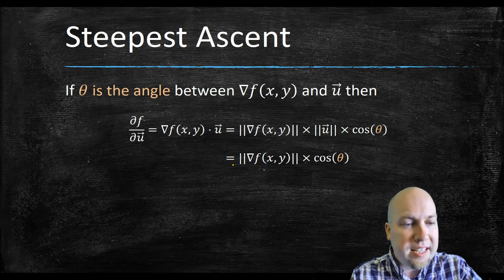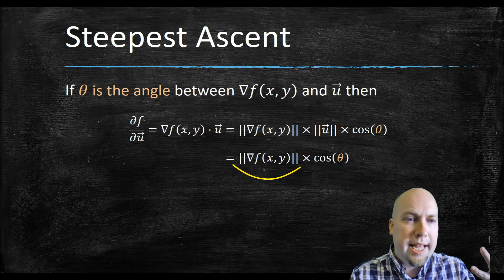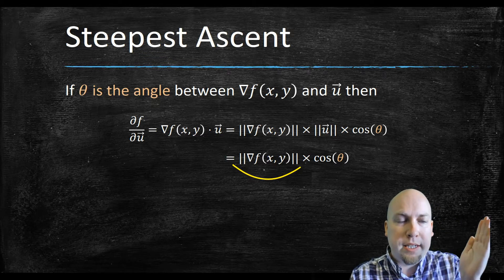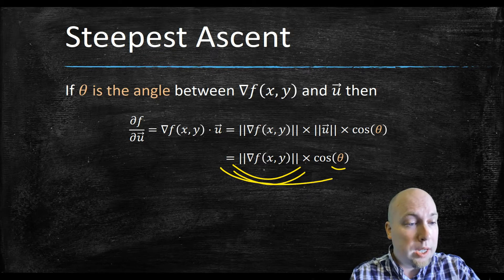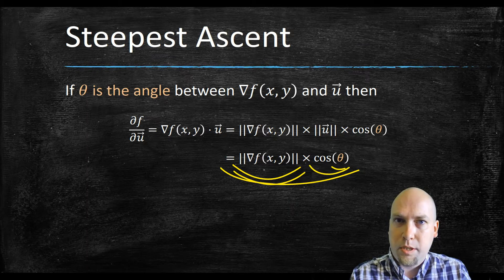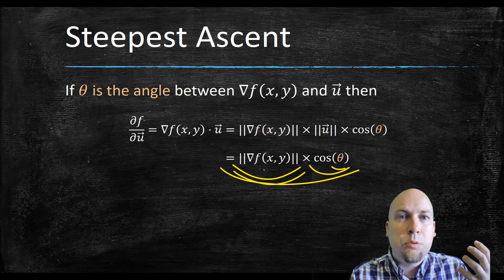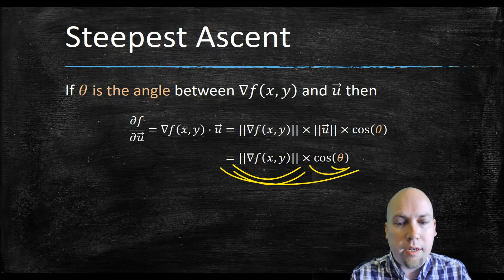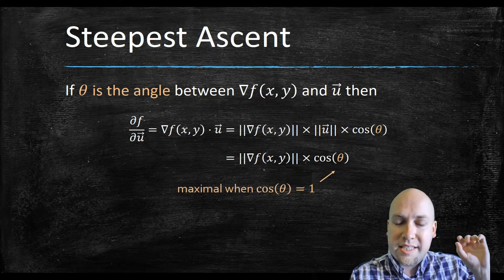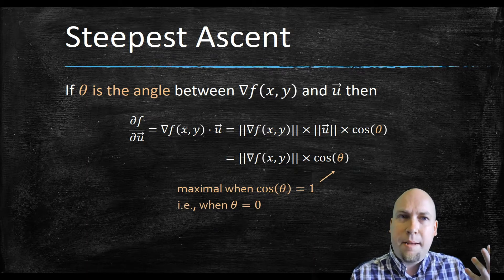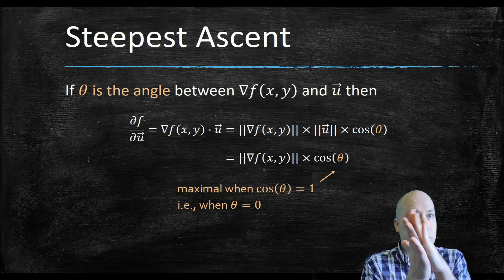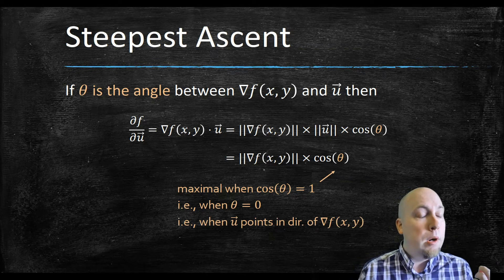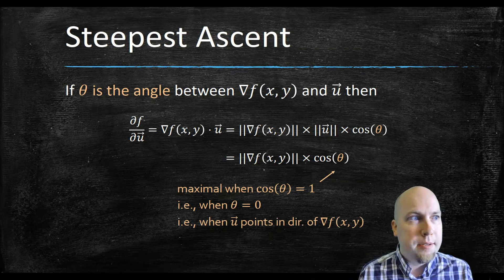The length of the gradient is something I have no control over. The only thing I have control over is where u is pointing — so I have control over theta, but not the length of the gradient. If I want to make this whole quantity as large as possible, the way to do that is to make cosine of theta as large as possible. Cosine of theta can never be bigger than one — it maxes out at one — so this is maximal when cosine of theta equals one, which happens exactly when theta equals zero, i.e., when u points in the direction of the gradient.